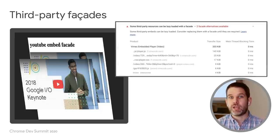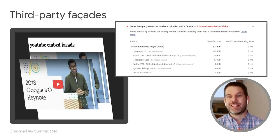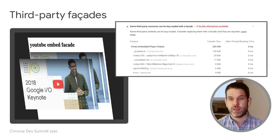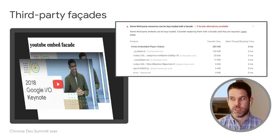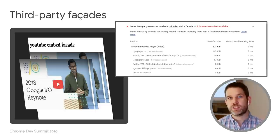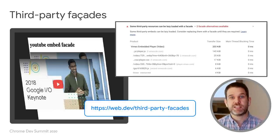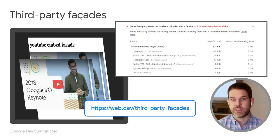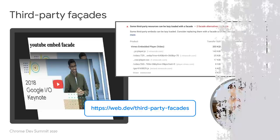We call this pattern a facade, and we've been seeing this become a little bit more popular as a nice web-perf friendly technique. We've added a brand new audit to Lighthouse that captures opportunities where you can employ this pattern. Right now, the audit finds opportunities like video embeds and chat widgets. If there's any facade that you'd like to see recommended, please go to the web.dev documentation to see how to submit them.